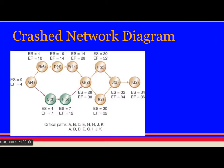This is the crash network diagram with the critical path. There are now 2 critical paths. Whenever we do crashing, the number of critical paths increases and the project suffers from more risk, so we should think carefully whenever we are doing crashing.